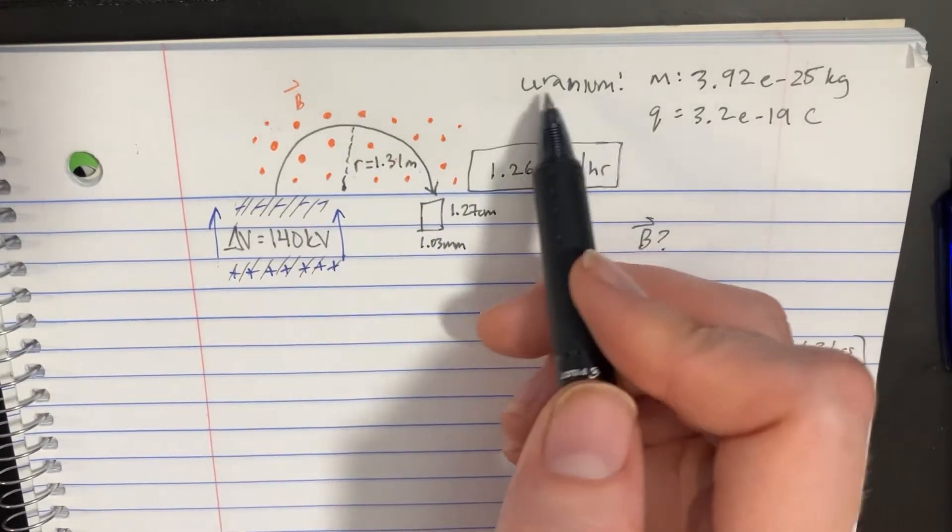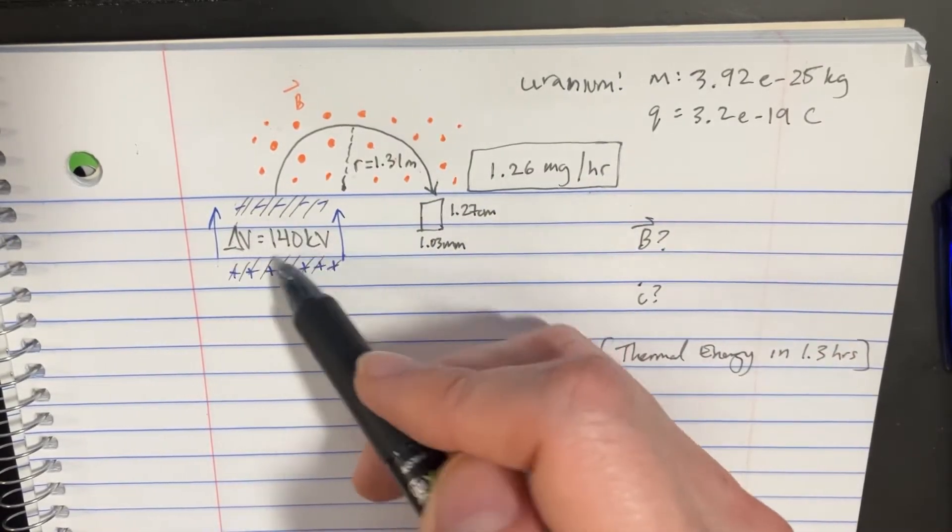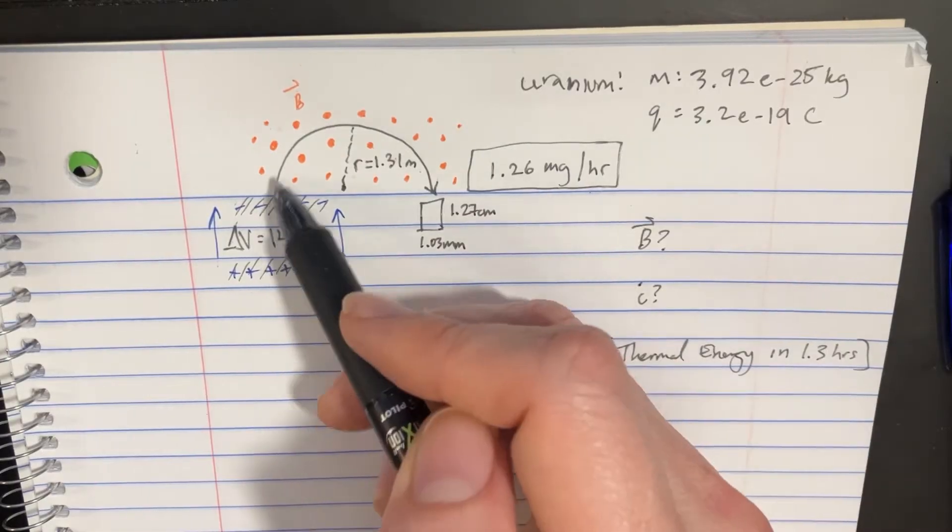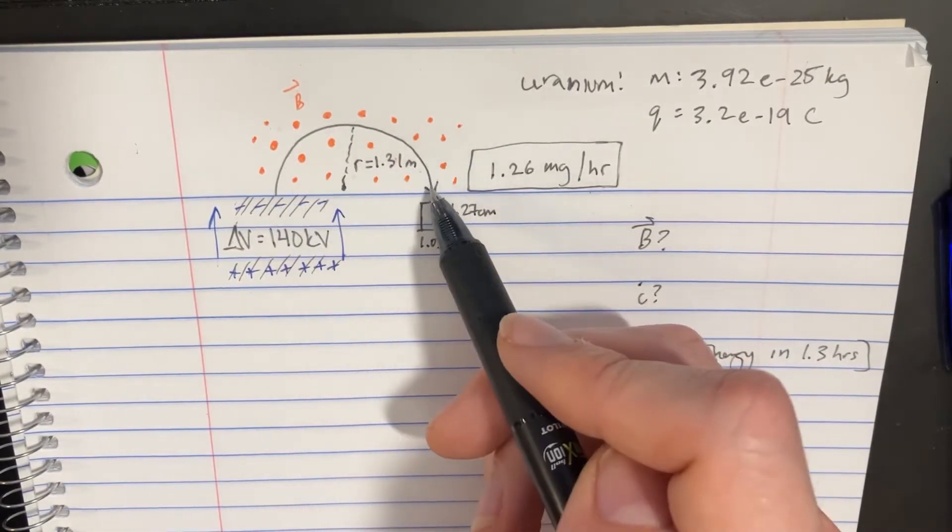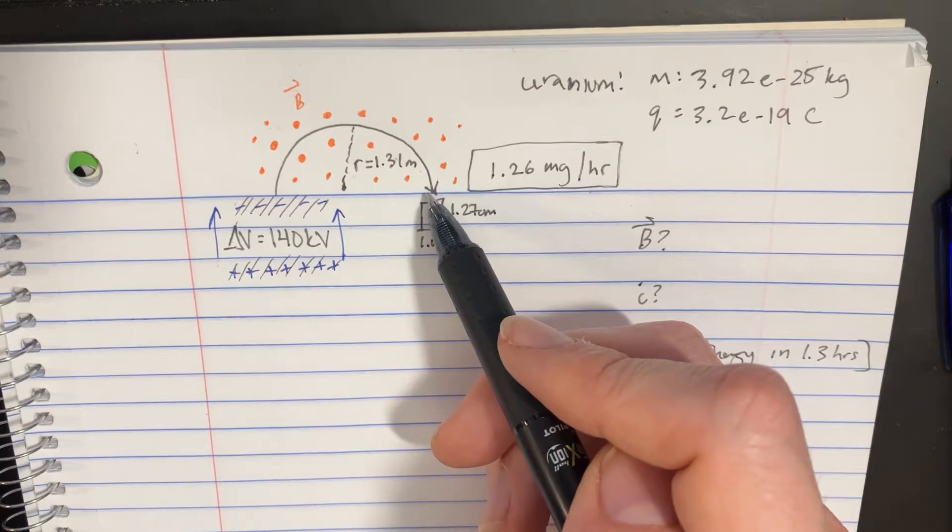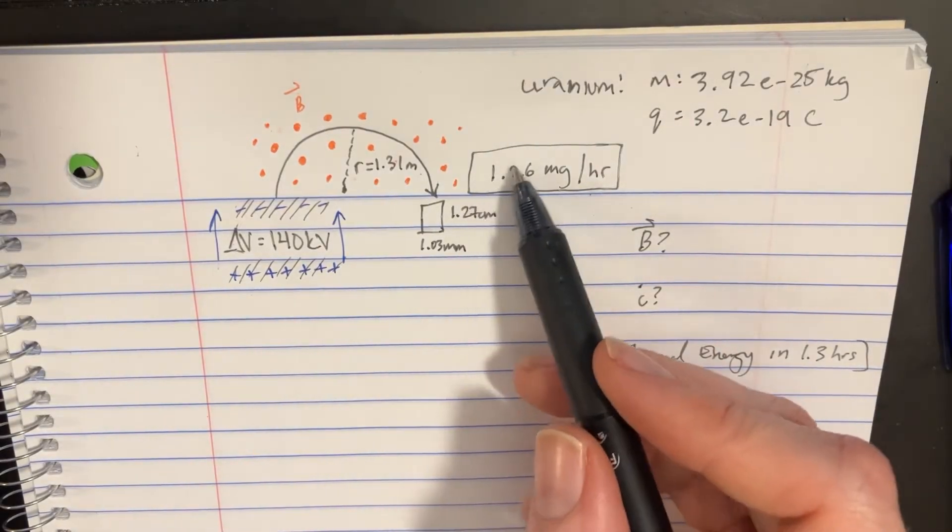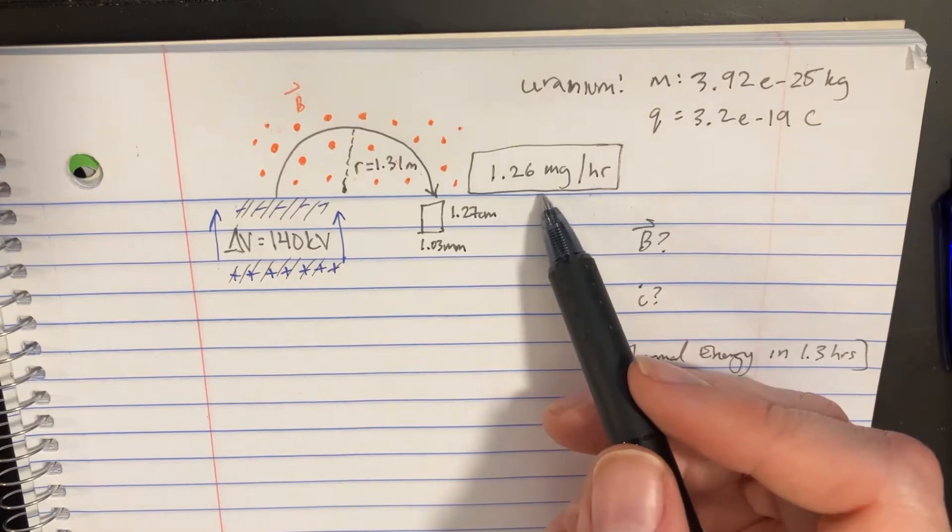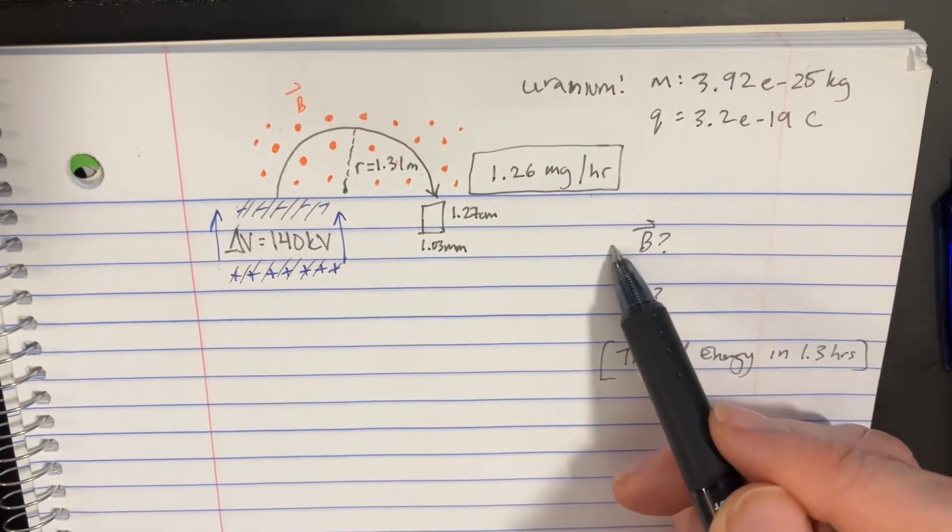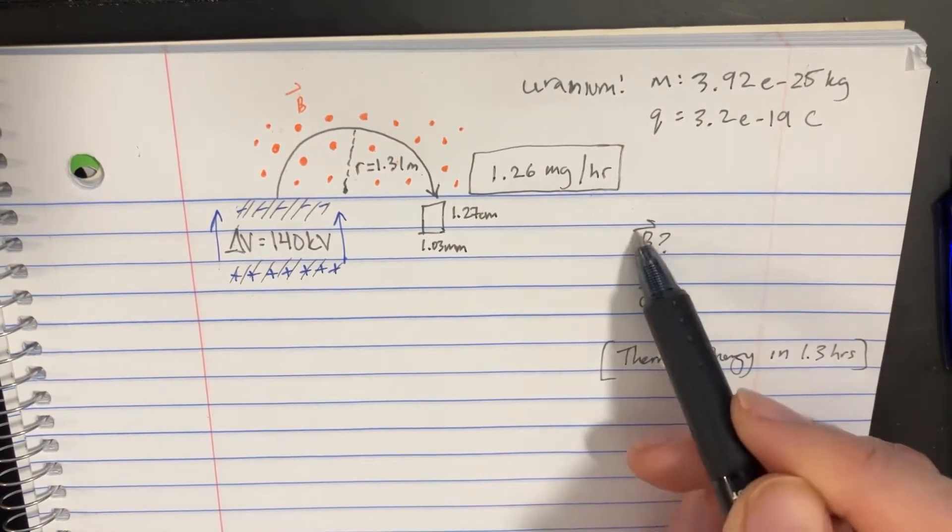In this problem we're looking at uranium ions that are moved through a voltage difference and then move through a magnetic field in a circle. The machine is able to produce 1.26 milligrams per hour and we're going to figure out these three different questions.